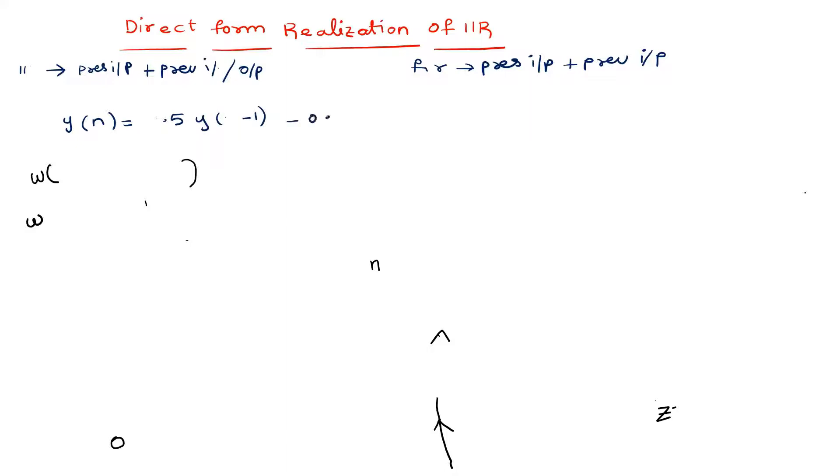minus 0.25y(n-2) plus some x components: plus 0.4x(n-1) plus x(n).